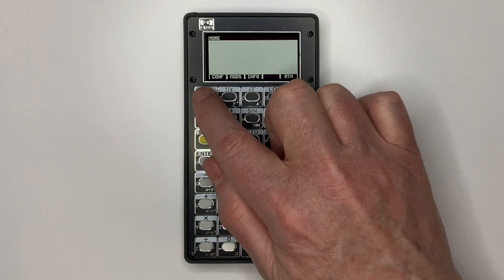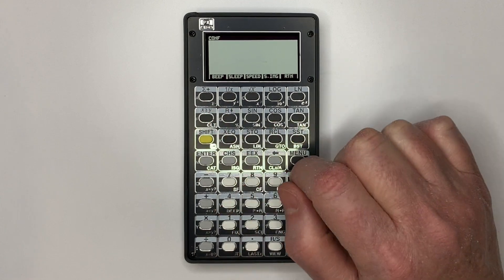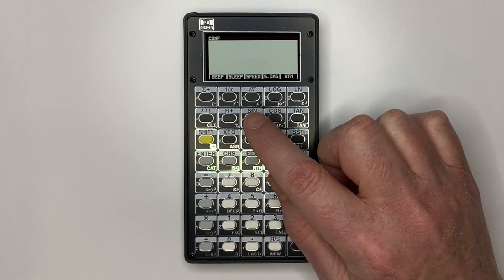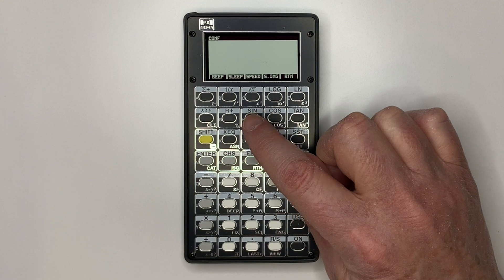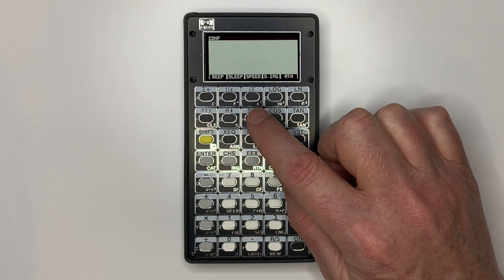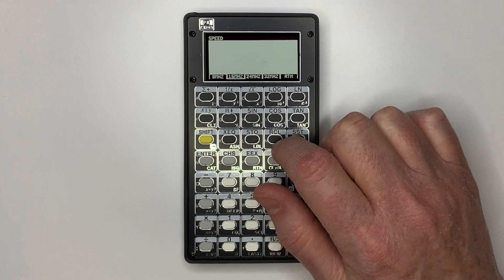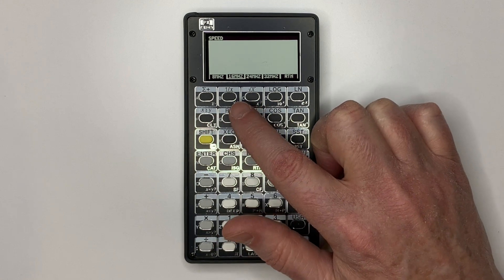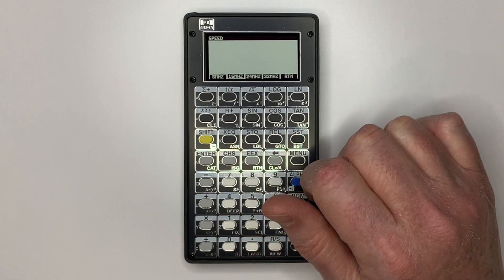In more configuration, you can turn on the keypress beep. You can change the sleep setting for when the calculator goes to sleep and configure the speed: 8 MHz, 16 MHz, 24 MHz, and 32 MHz.